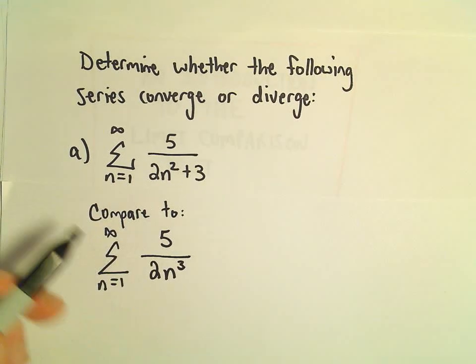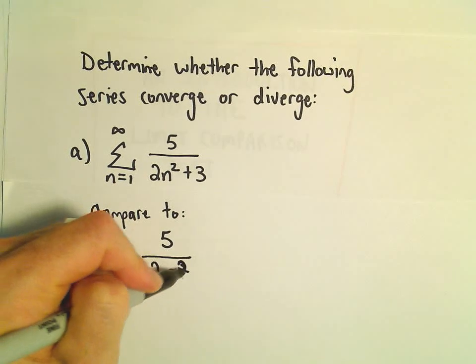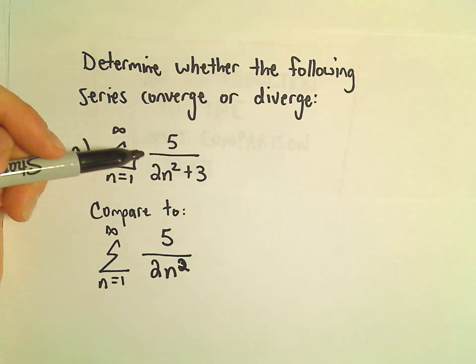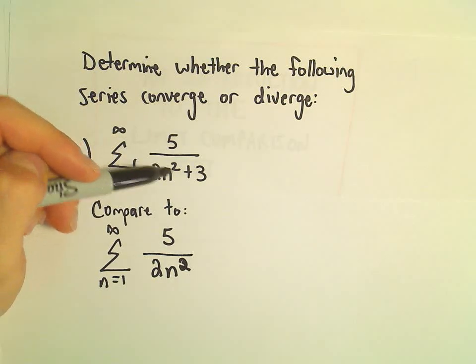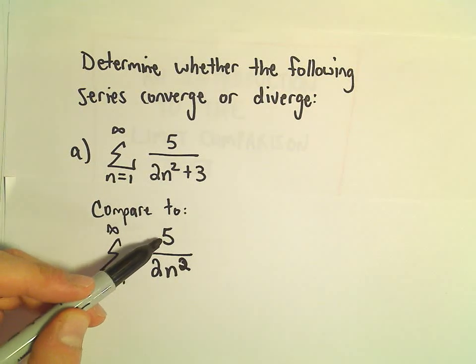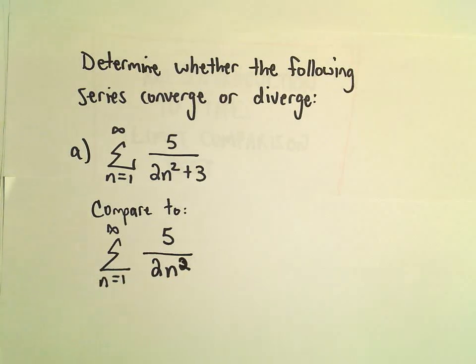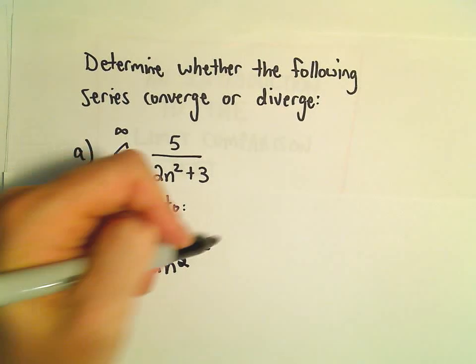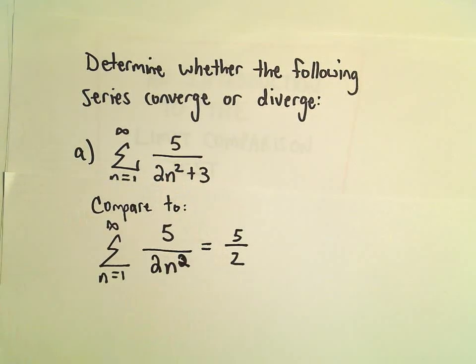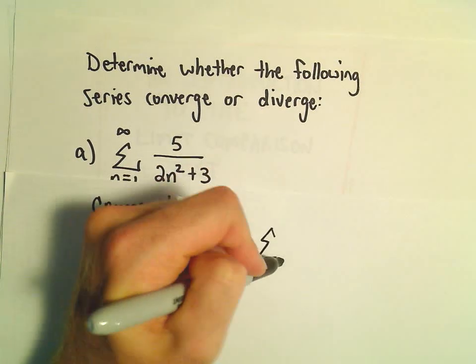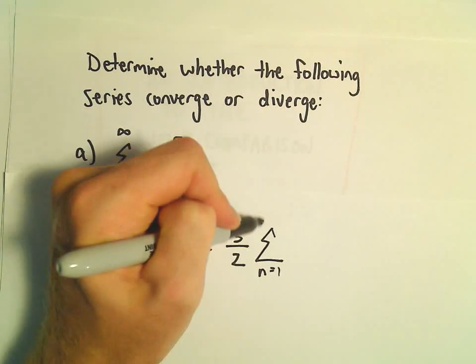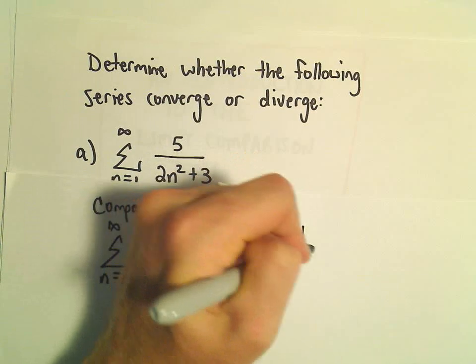So I'm going to compare our series, 5 over 2n² plus 3, to the series 5 over 2n². And this series, we can factor the 5 over 2 out front.